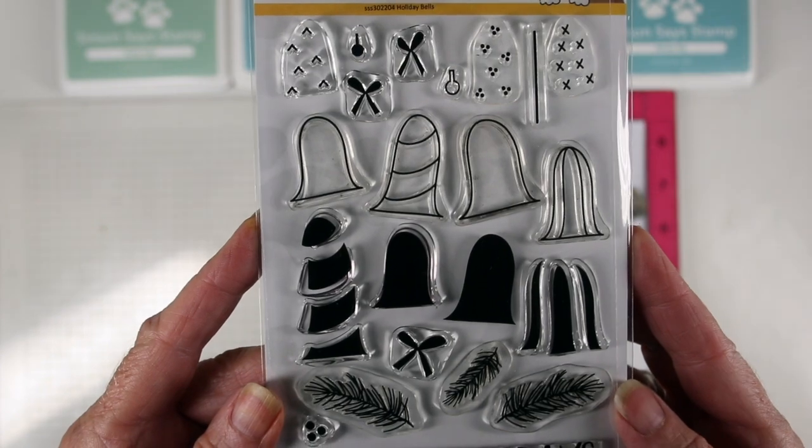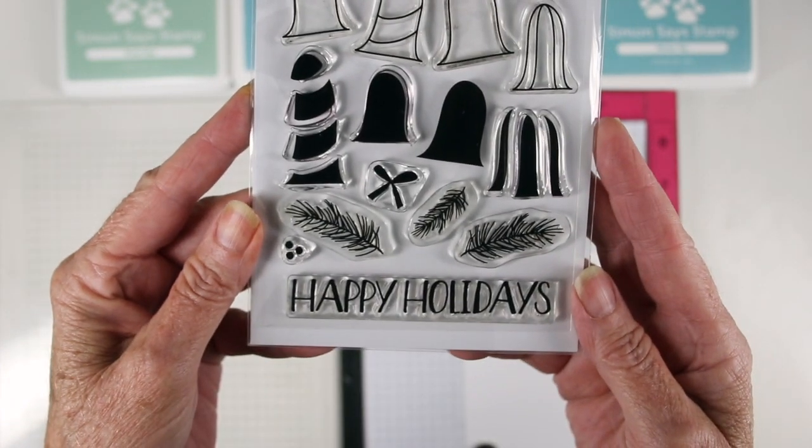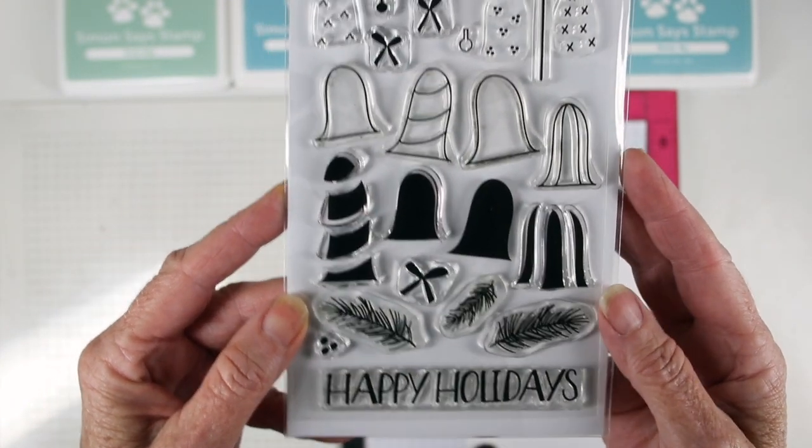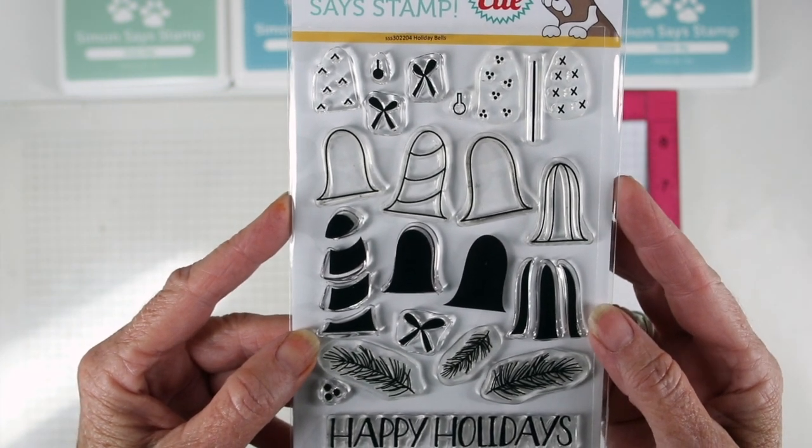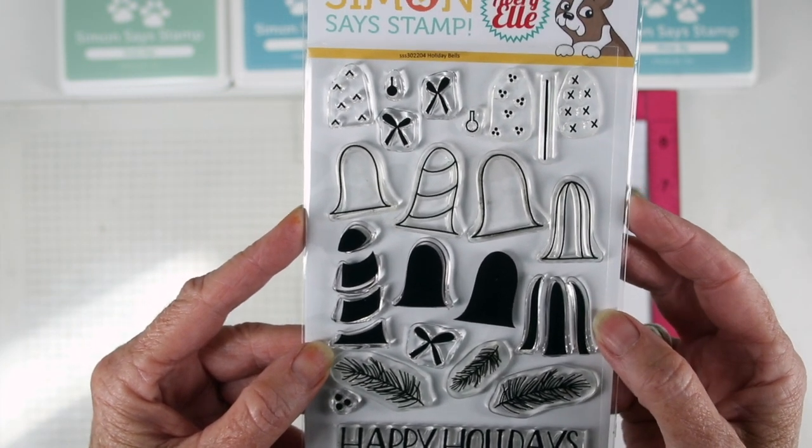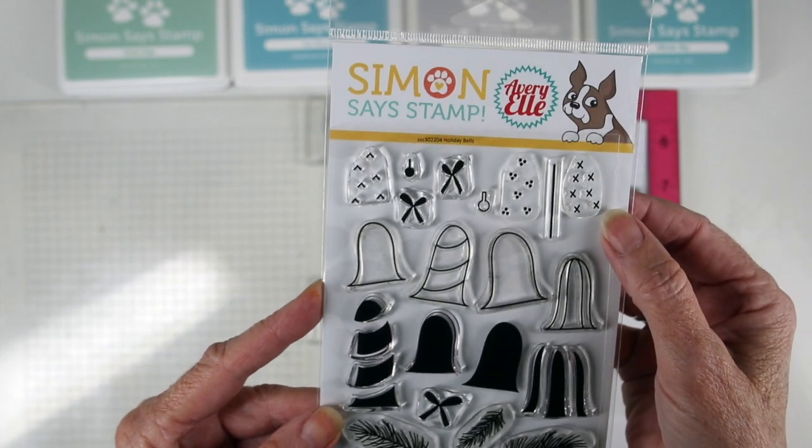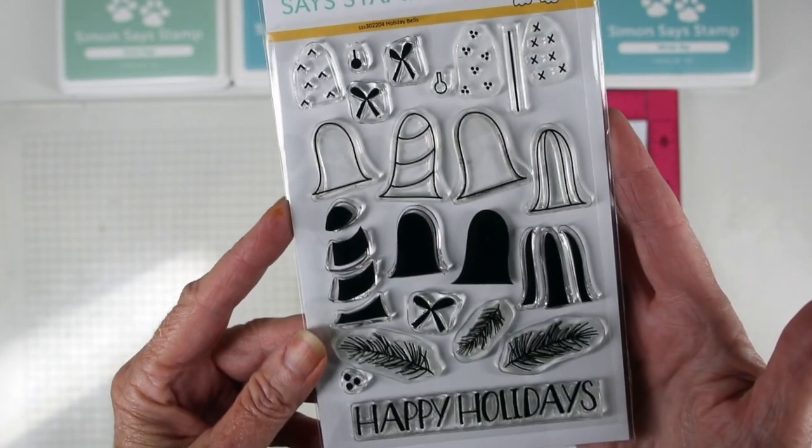This is a layering set so you have solid and also outline imagery that goes together so you can add different colors to each of those solid pieces and then stamp your outlines on top and it also has little details that you can add to your bells.